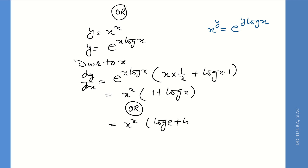We know that 1 equals log e, and log m plus log n equals log(m·n). So the answer can also be written as x^x · log(ex).